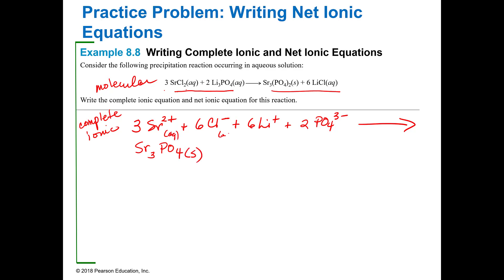To get my net ionic, I'm going to look and see what my spectator ions are. I've got lithium on both sides and I've got chloride on both sides. Now I'm just going to write my reaction with what's left. I've got three Sr 2+ plus two PO4 3- gives me the Sr3(PO4)2 solid.